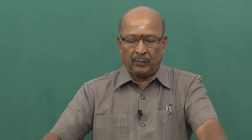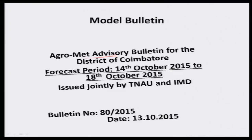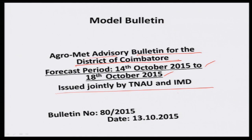This is a model bulletin — an agro-met advisories bulletin for the district of Koyamthur, from Tamil Nadu. You can substitute your own district. The forecast period is issued jointly by the organization TNAU and the India Meteorological Department. Then there is the bulletin number, note number, year, and date. This is very important — this is the format.